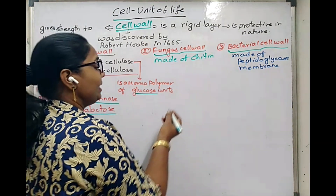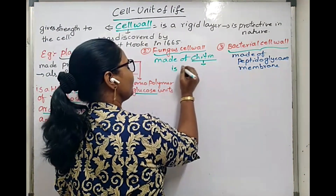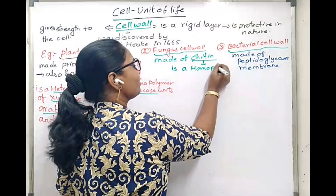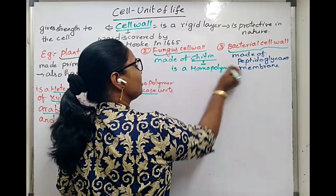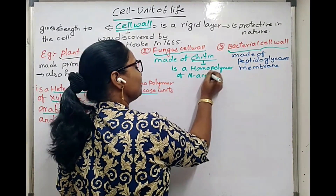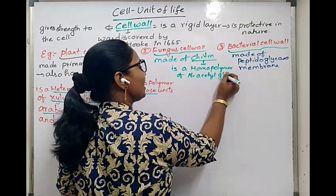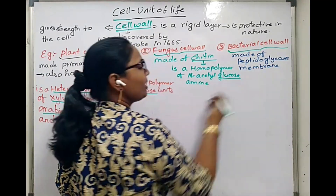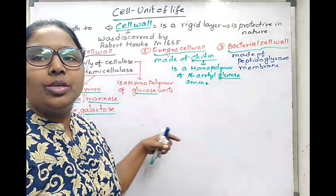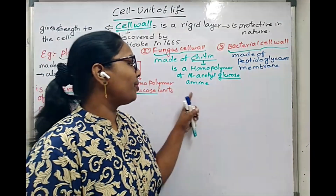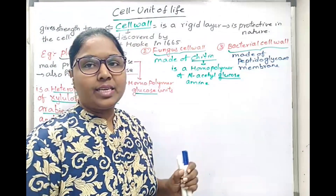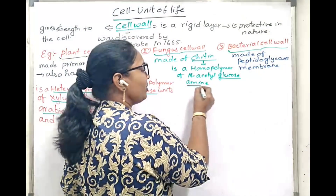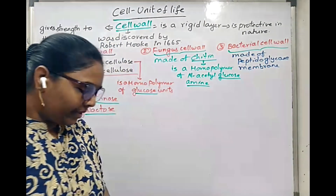Coming to chitin. Chitin is a homopolymer of N-acetyl glucosamine. Here we are using only one type of carbohydrate unit, so we use the term homopolymer. If a question asks about the nitrogen-containing homopolymer, the answer will be chitin, because the amine group contains nitrogen.